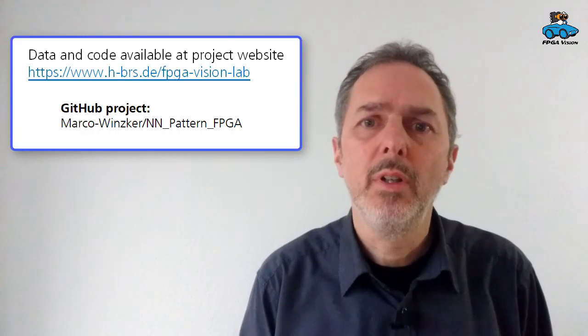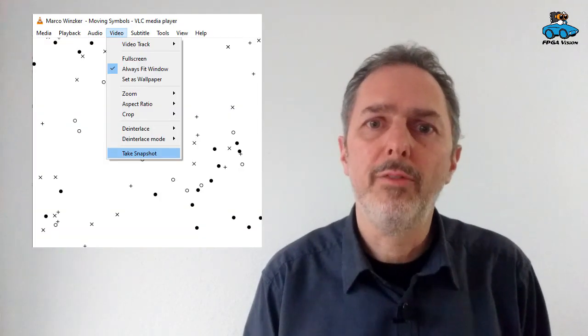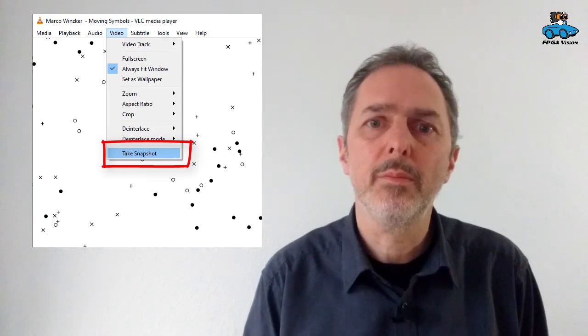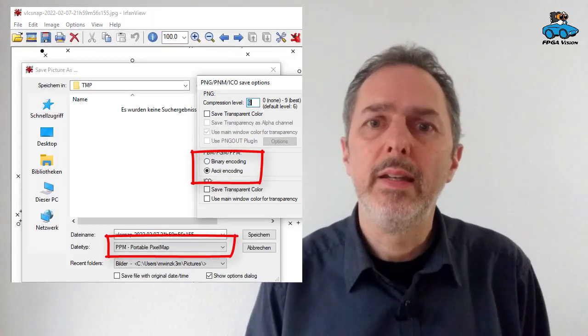The code is available on GitHub, so you can download it to make your own experiments. Next step in the design is simulation. And for simulation we also have a test bench that has been explained also in another previous video. As input data we need one image. And this image is used in the PPM format because this is a file format that can be used by TestBench. To derive that we take the video of our symbols and we take a single image. This can be done for example with the VLC player. And then we convert that image to the PPM format. And the tool I use for that is IrfanView.